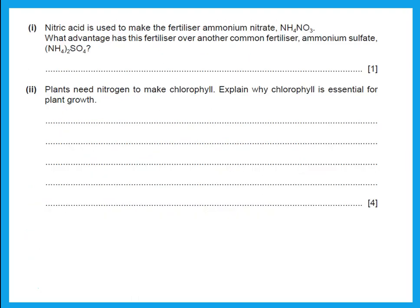Nitric acid is used to make the fertilizer ammonium nitrate. What advantage has this fertilizer over another common fertilizer, ammonium sulfate? The percentage nitrogen in ammonium nitrate is much more than that in ammonium sulfate, and we want something that will give more nitrogen.